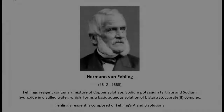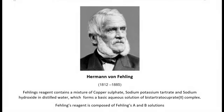Fehling's reagent was developed by German chemist Hermann von Fehling in 1849 and contains a mixture of copper sulfate, sodium-potassium tartrate, and sodium hydroxide in distilled water, which forms a basic aqueous solution of bis-tartratocuprate complex. This complex is quite unstable and readily decomposes. Therefore, Fehling's reagent comes in two separate solutions: Fehling's A, which is a solution of copper sulfate, and Fehling's B, which contains a mixture of sodium hydroxide and sodium-potassium tartrate.